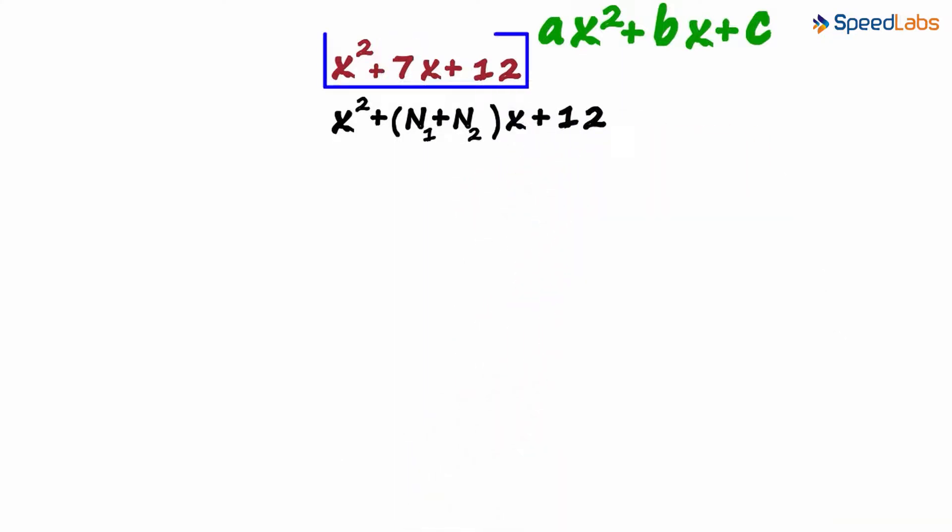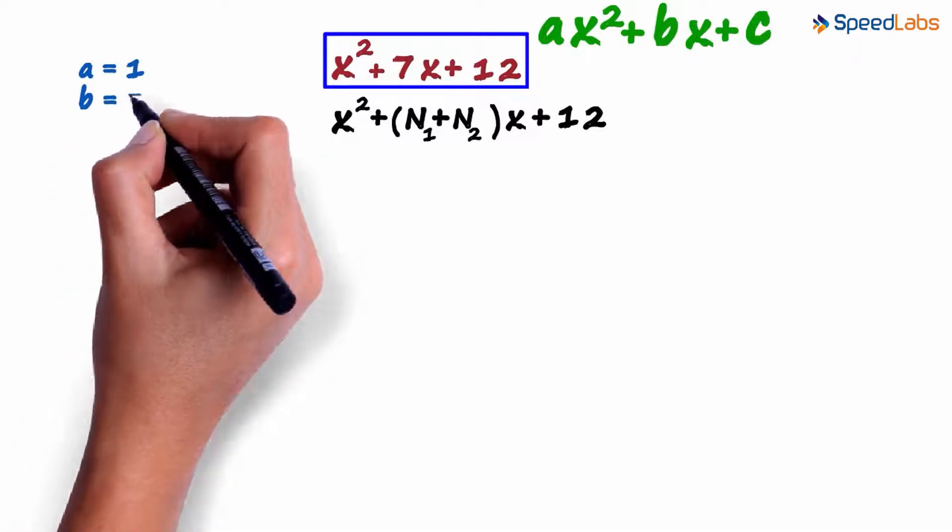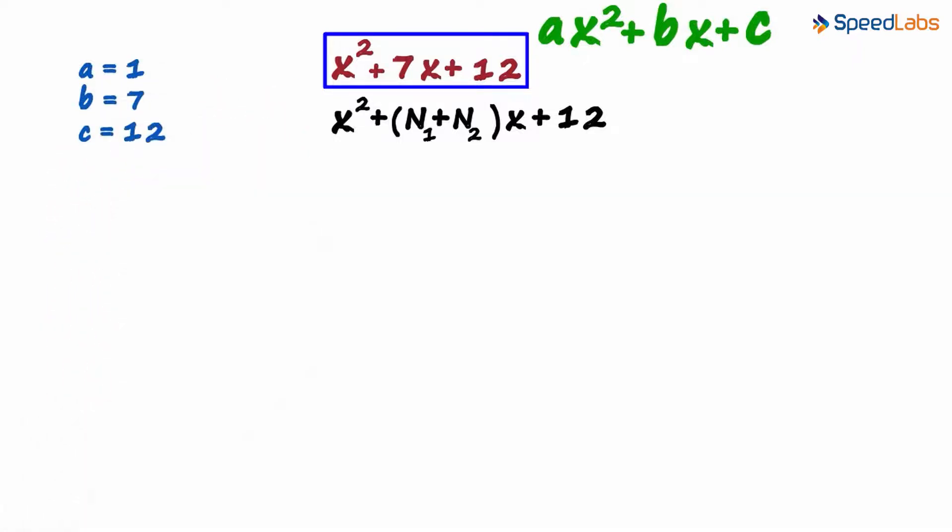In this polynomial, a is 1, b is 7, and c is 12. We are trying to write the coefficient of the middle term as sum of two numbers. But we cannot just write it as the sum of any two numbers.